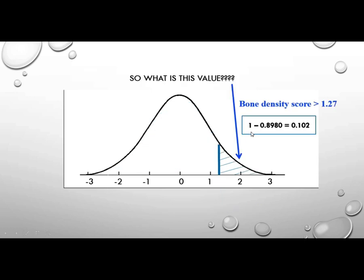So if that's the case, then what's the value to the right of that? What is the probability that someone will have a bone density score that's greater than 1.27? Well, if I know that the whole area under this curve is equal to 1 and I just subtract 1 minus the bone density or the probability, rather, on this side of the curve, I'll get the probability on the right side of the curve. So that's 1 minus 0.898 and I get 0.102.